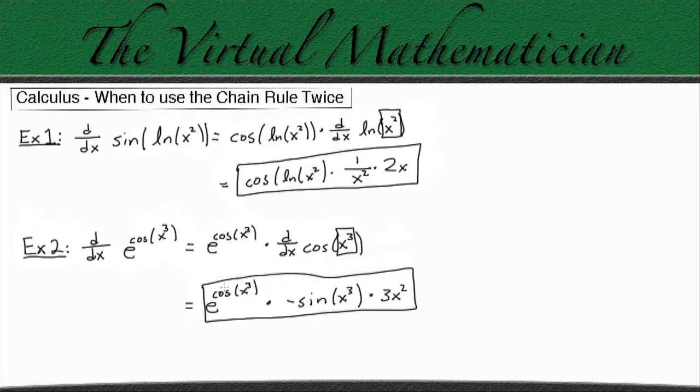It's functions like these that are going to require us to use the chain rule within the chain rule. I hope this helps clear things up, and thanks for watching.